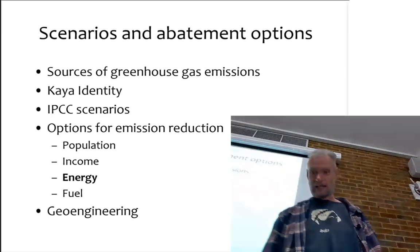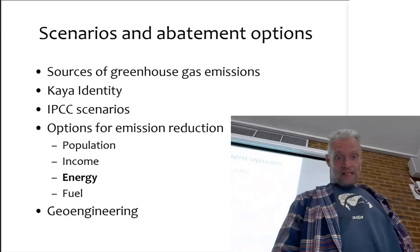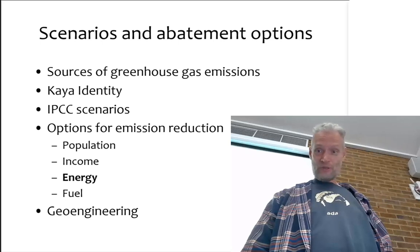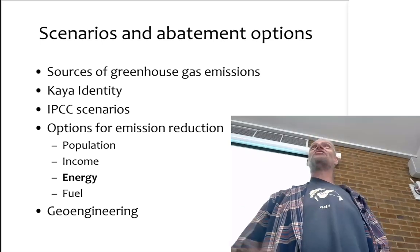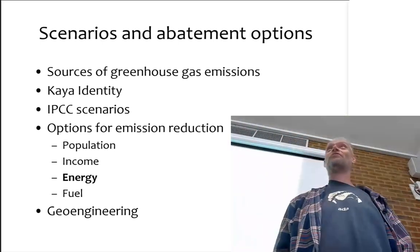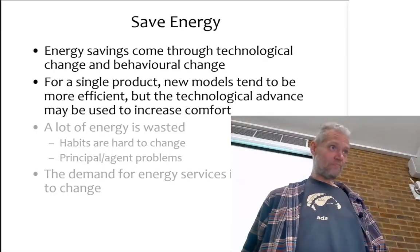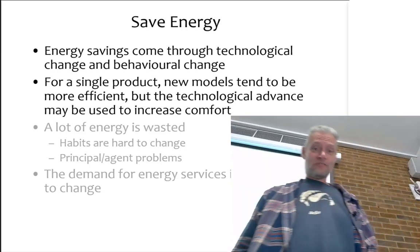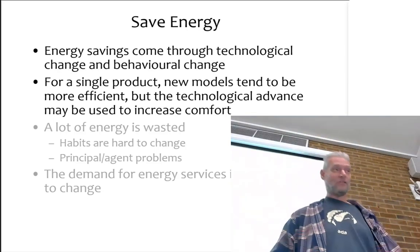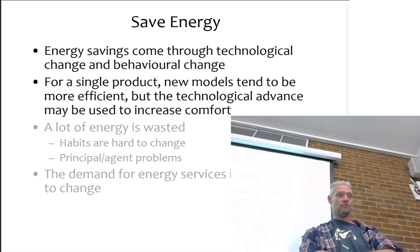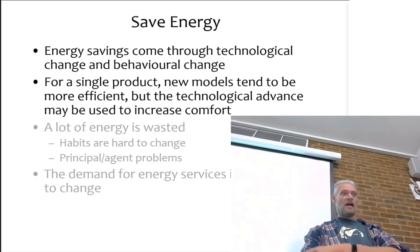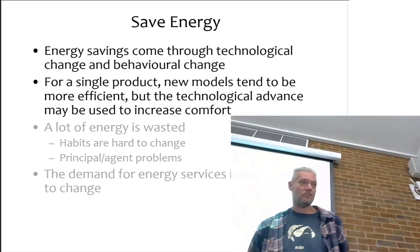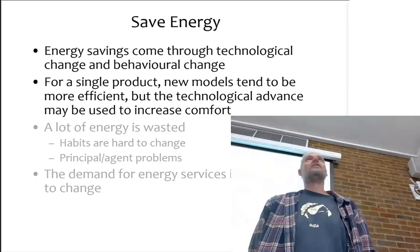So those are our two basic working options. First, let's look at energy efficiency improvements, or reductions in energy intensity — energy intensity is just the reciprocal of energy efficiency. Energy savings come about through two routes: technological change and behavioral change. Let's look at technological change first.